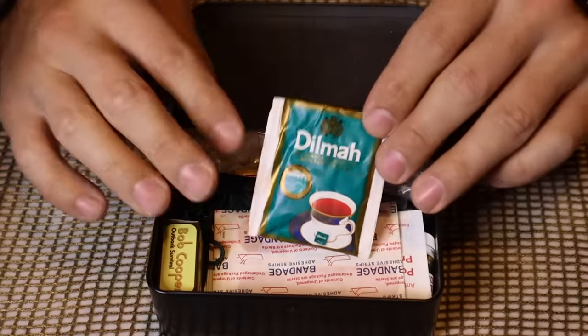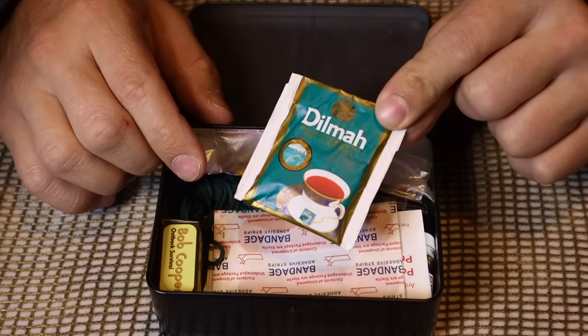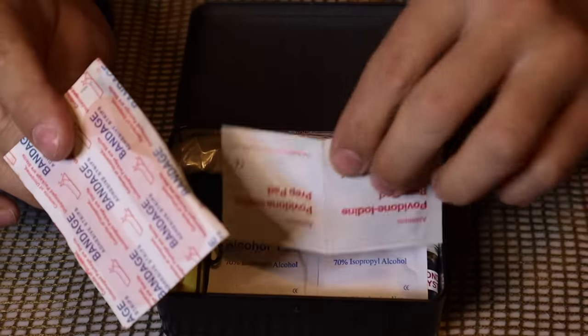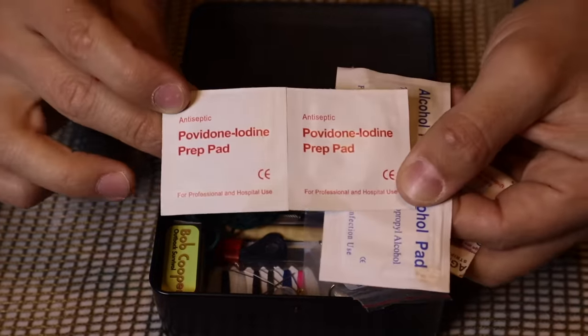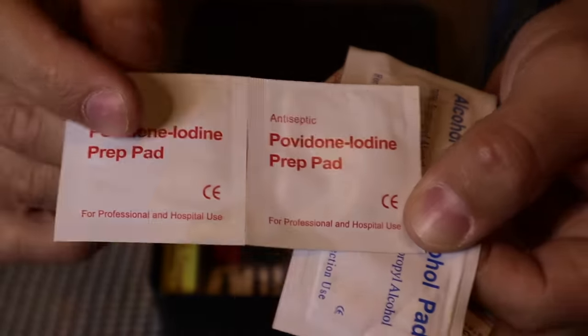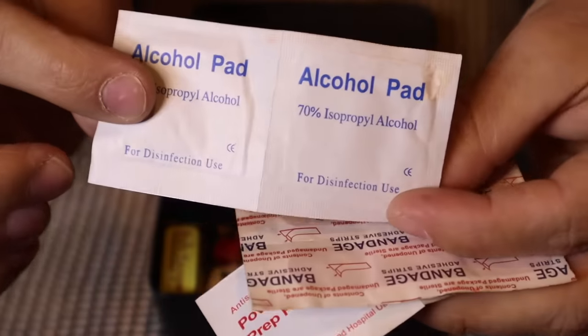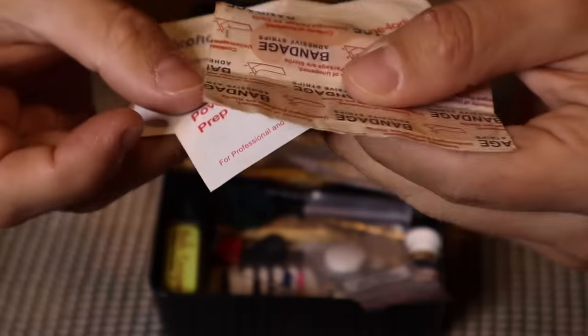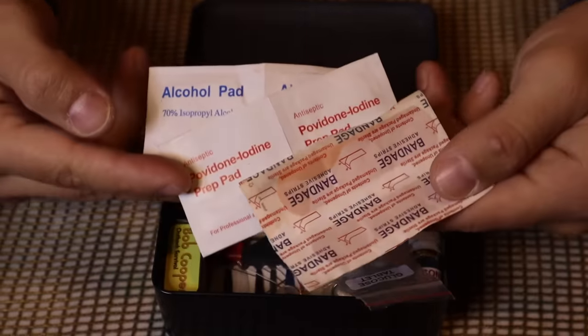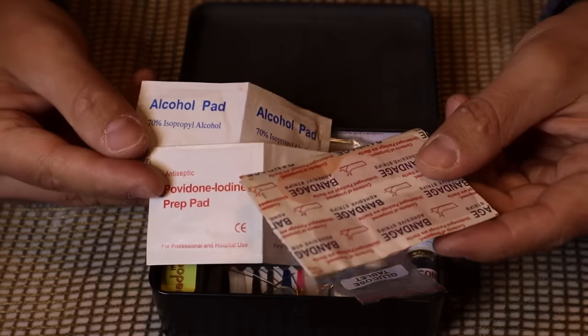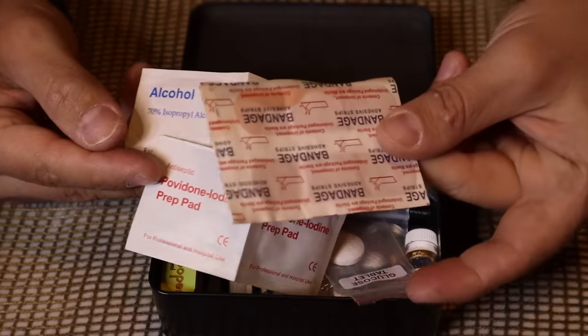All right, next we've got some band-aids or plasters as well as an iodine prep pad. We've got iodine prep pads with our band-aids or plasters, and we have alcohol prep pads as well. Just a small kit to clean and disinfect wounds, make sure that we're clean and staying safe, and then sanitize or sterilize that wound and then cover it up to maintain health and prevent infection.